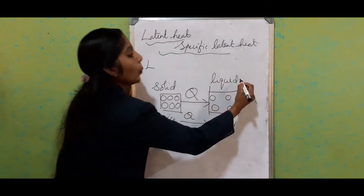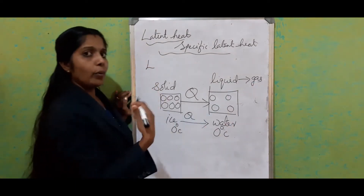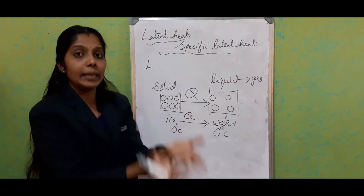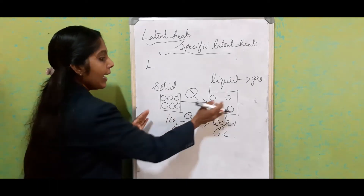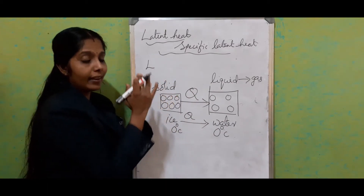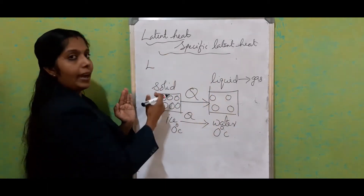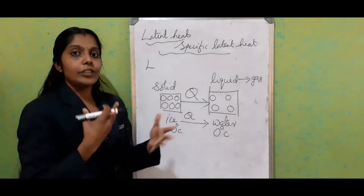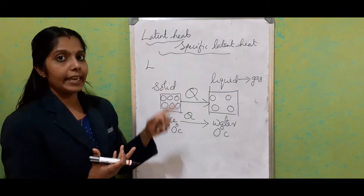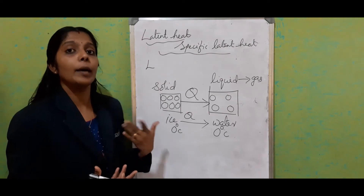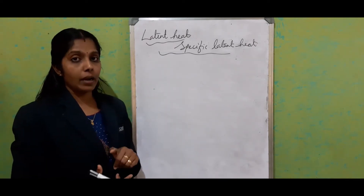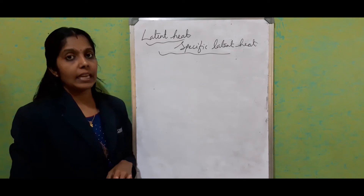The same thing happens when liquid changes into gas. And what happens when the reverse process occurs? The amount of heat energy is liberated or rejected to the surroundings, and finally all the molecules come together to form liquid state and finally solid state. So while changing the phase, the amount of heat energy absorbed is known as latent heat, and it is utilized to change the potential energy.